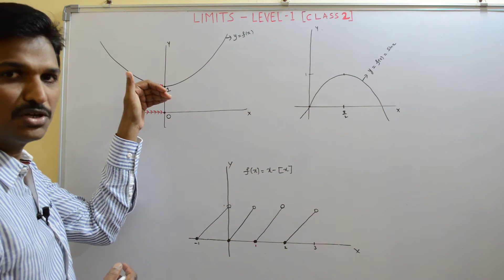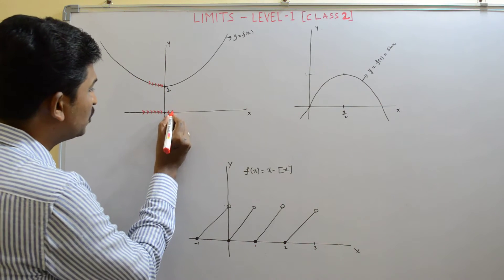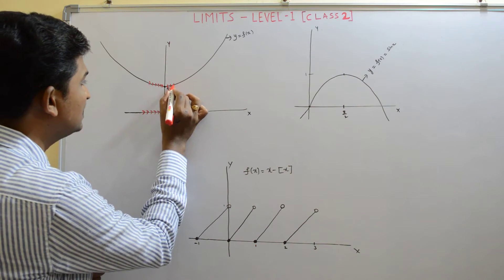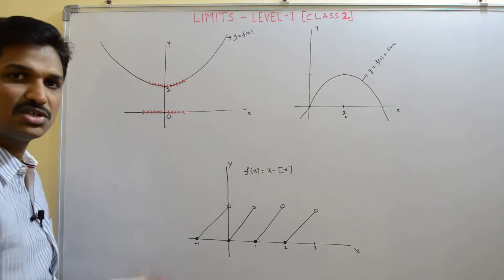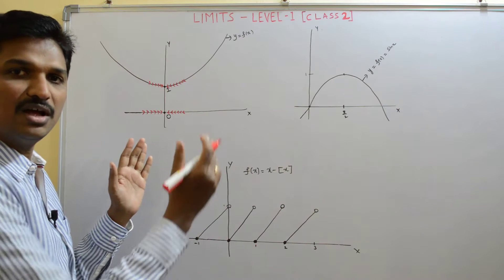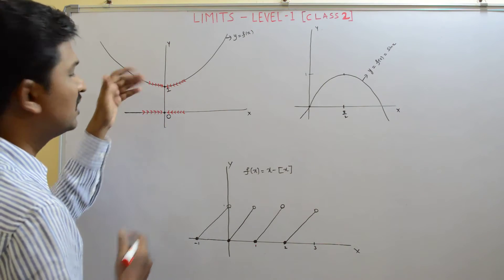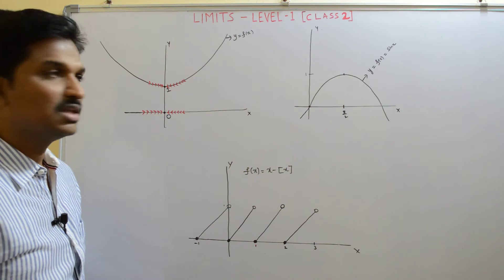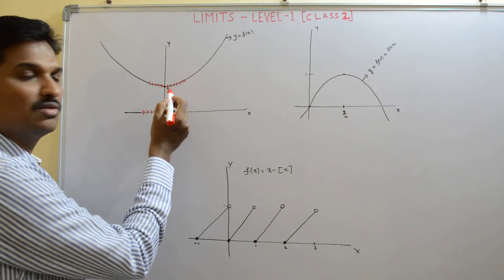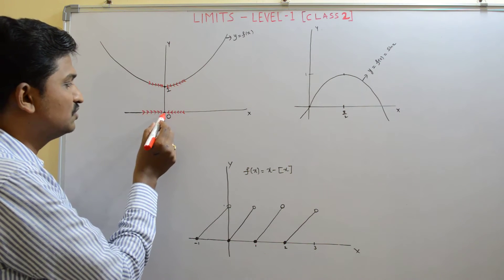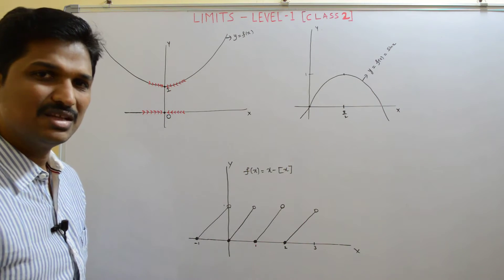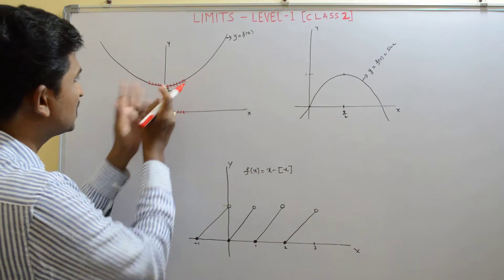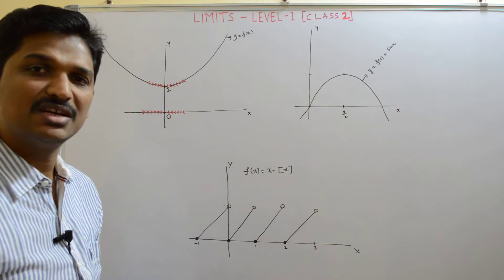As x approaches to 0 from the right, f of x is also approaching to 1. The function approaches to 1 from both left and right when x approaches to 0. From this, as x approaches to a particular value from left and right, f of x approaches to a particular value — and from this the concept of limit is developed.